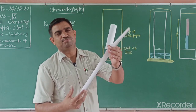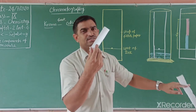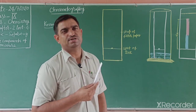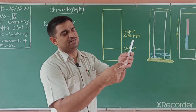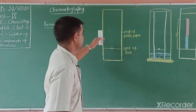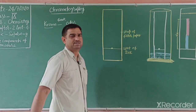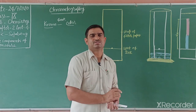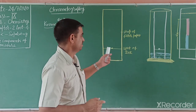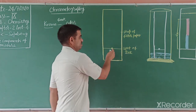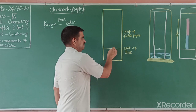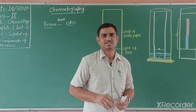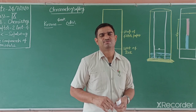I have a chromatography strip — this special paper is known as Whatman filter paper. On this Whatman filter paper, we make a spot at the baseline, about 2 to 3 centimeters from the bottom. We use this to separate different substances like ink, dye, and other colored or colorless substances.